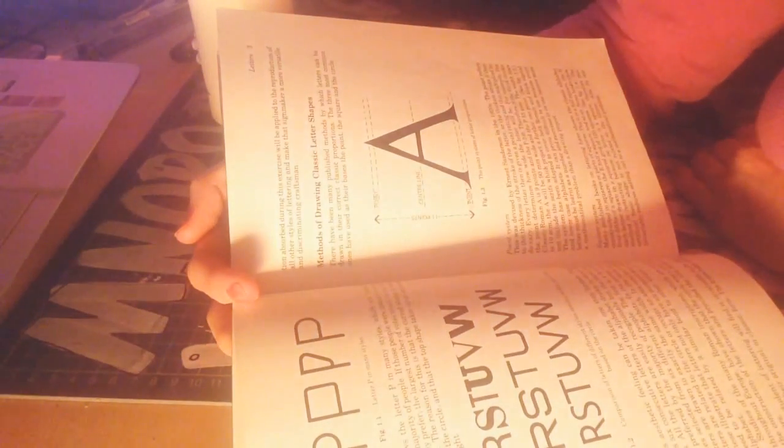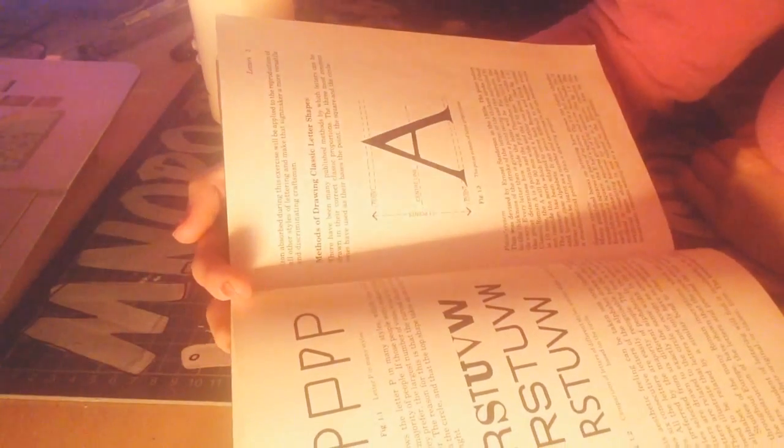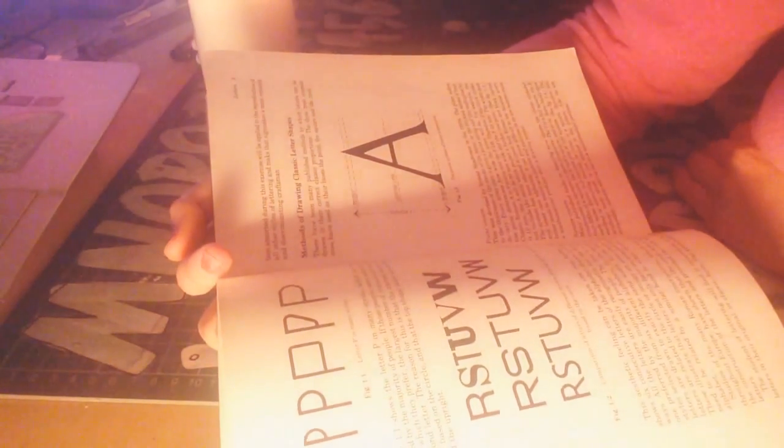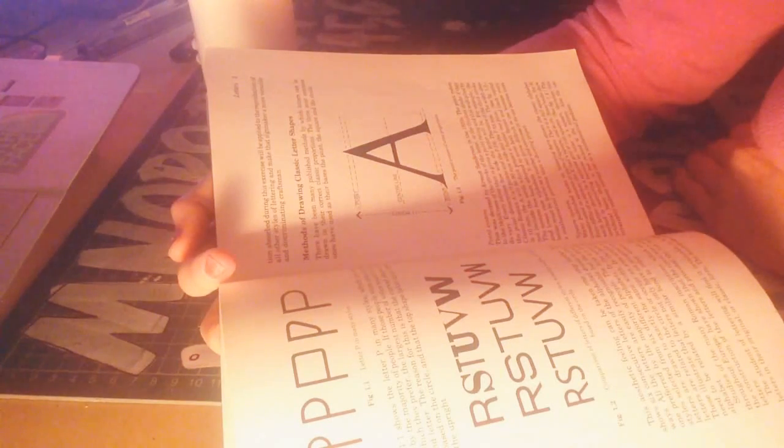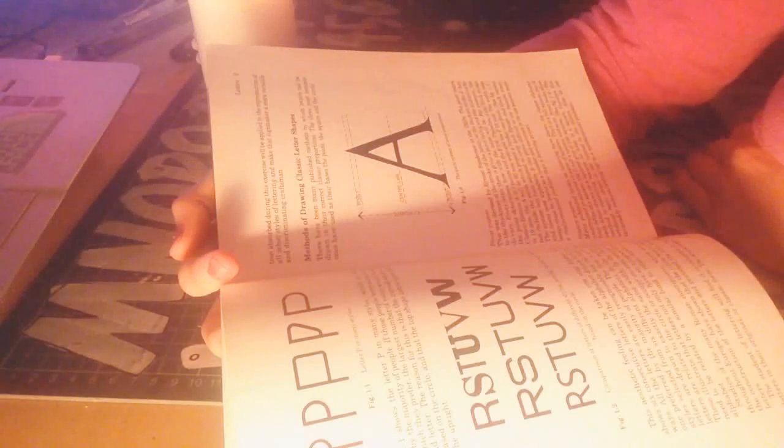Methods of drawing classic letter shapes. There have been many published methods by which letters can be drawn in the correct classic proportions. The three most common ones have used as their bases, the point, the square and the circle.